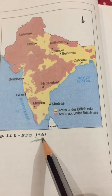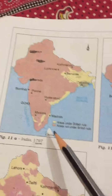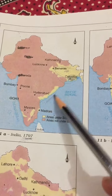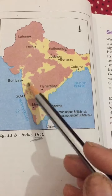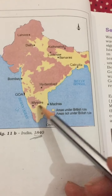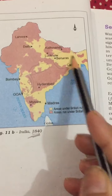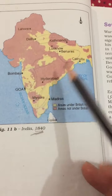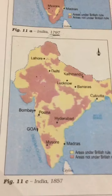Now see the next map — in 1840 compared to 1797, they had only a small part, but by 1840 nearly half the territories were annexed. This includes the Marathas, Bengal, Delhi, and other parts.